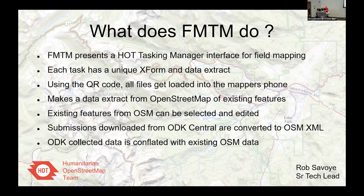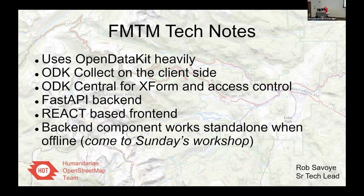Editing existing data is different from adding POIs — adding POIs is easy but editing existing data is not. We collect all the data with the existing OSM data extract so changed and added tags get conflated with existing data and then uploaded. It uses ODK heavily — ODK is an XML-based format used by 20 or 30 different apps, commercial and open source. We use ODK Central on the server side for file and data management. We built a FastAPI backend on top of OSM Fieldwork, plus a full React-based frontend, and the backend runs fully standalone and offline.